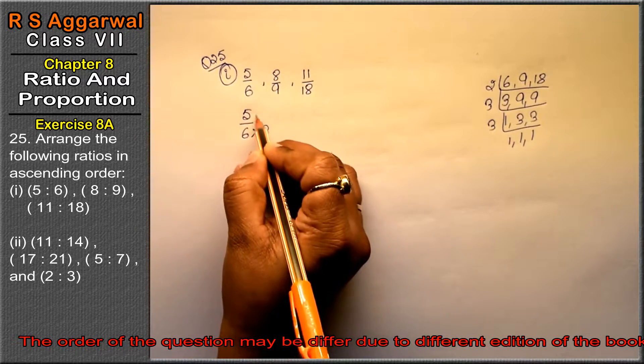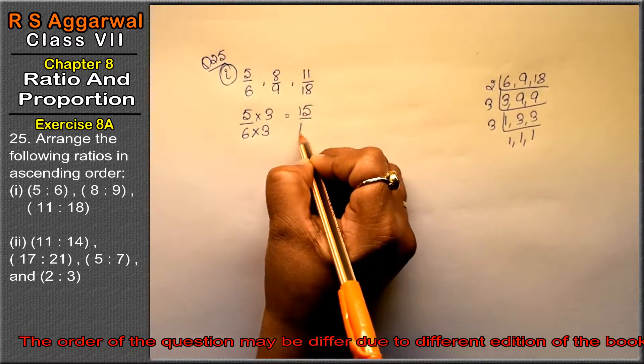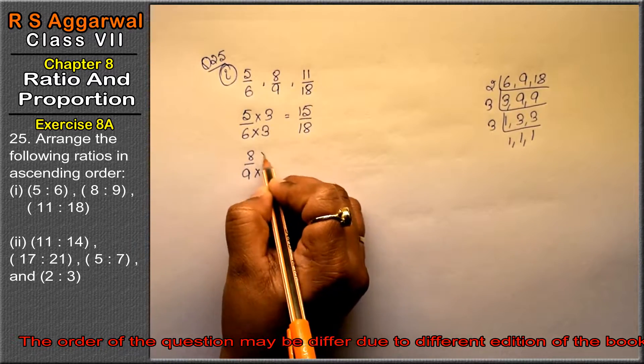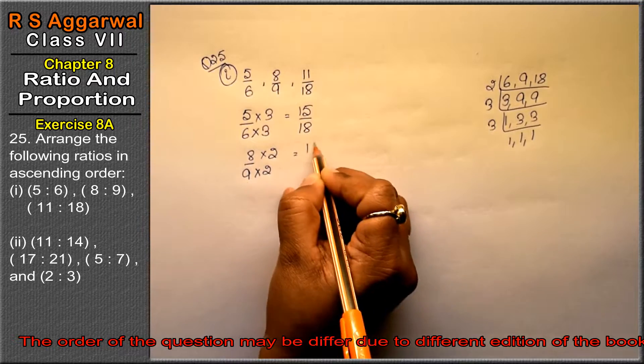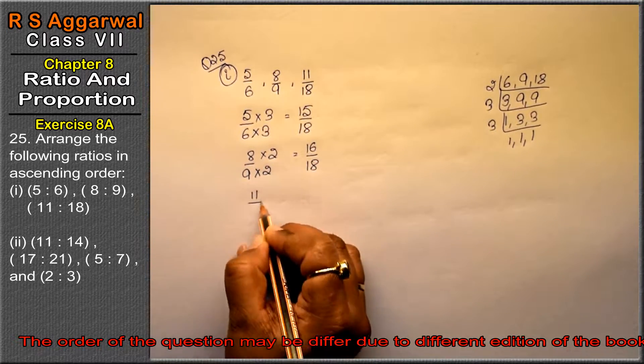6 into 3 is 18, so it will be multiplied by 3. So it is 15 upon 18. Next is 8 upon 9, 9 into 2 is 18, so multiply by 2. So it is 16 upon 18. Last one is 11 upon 18.